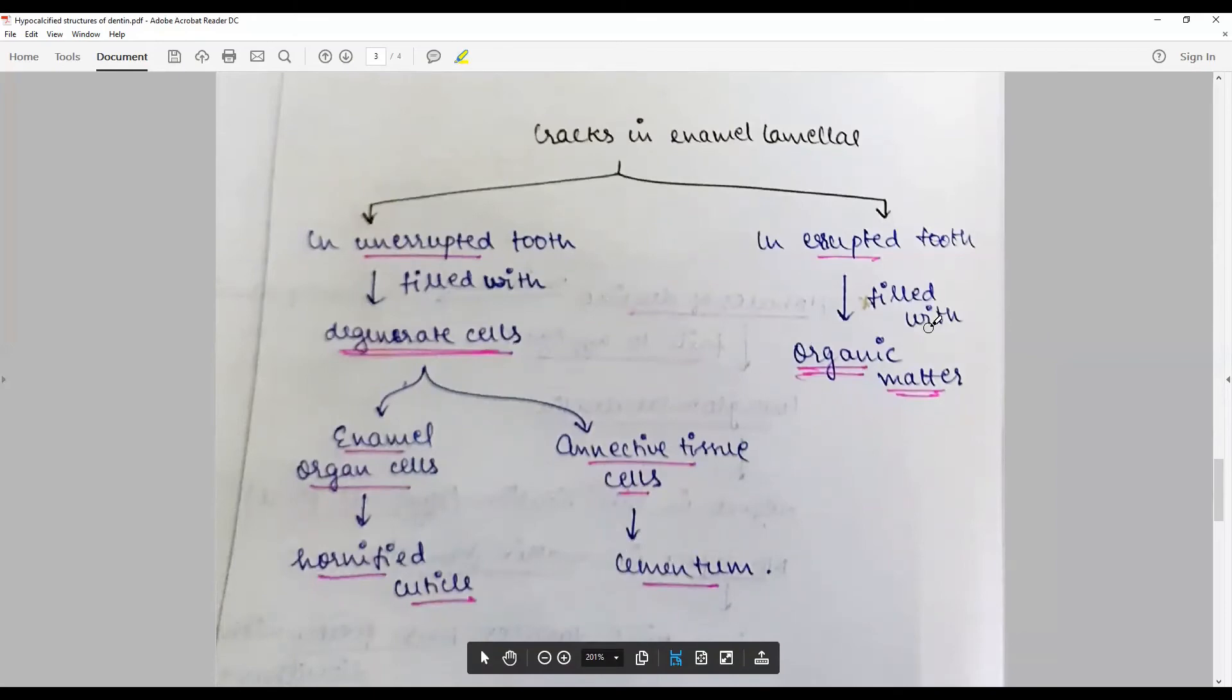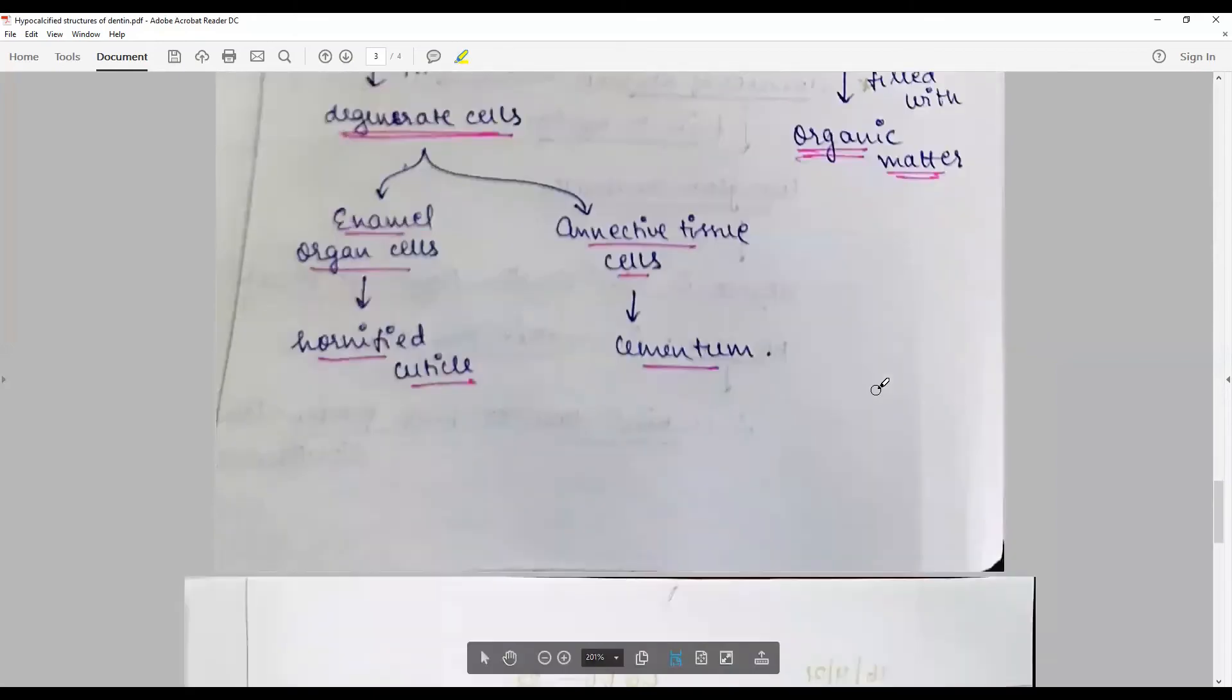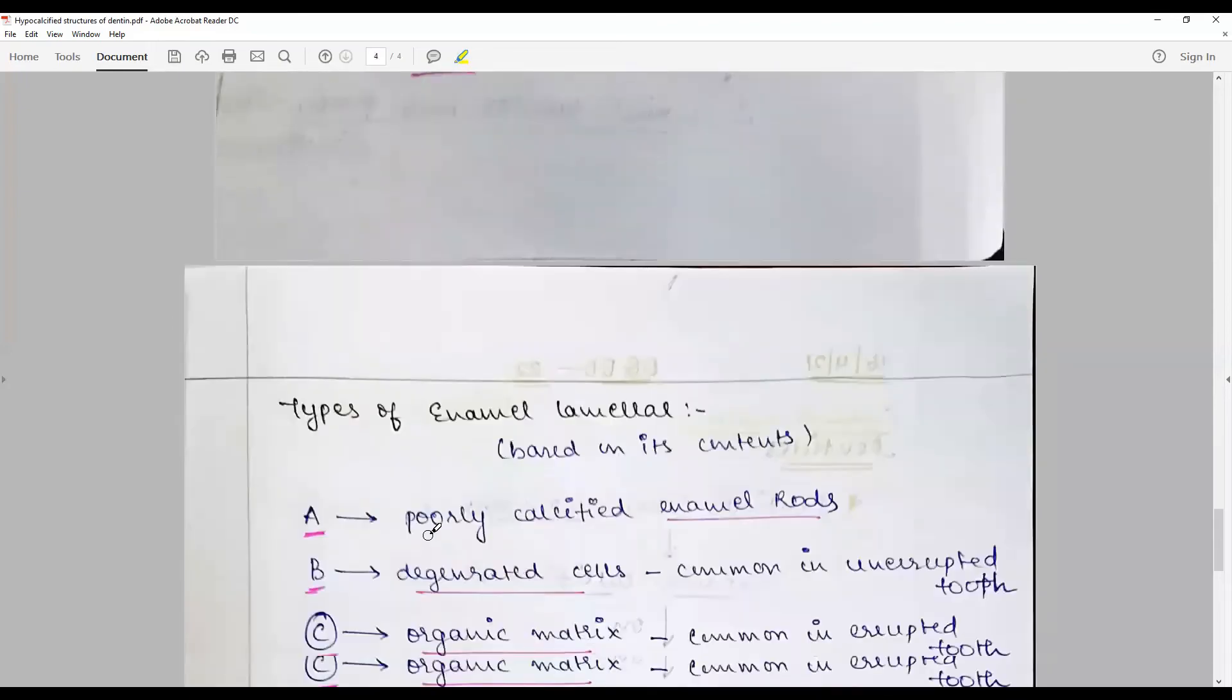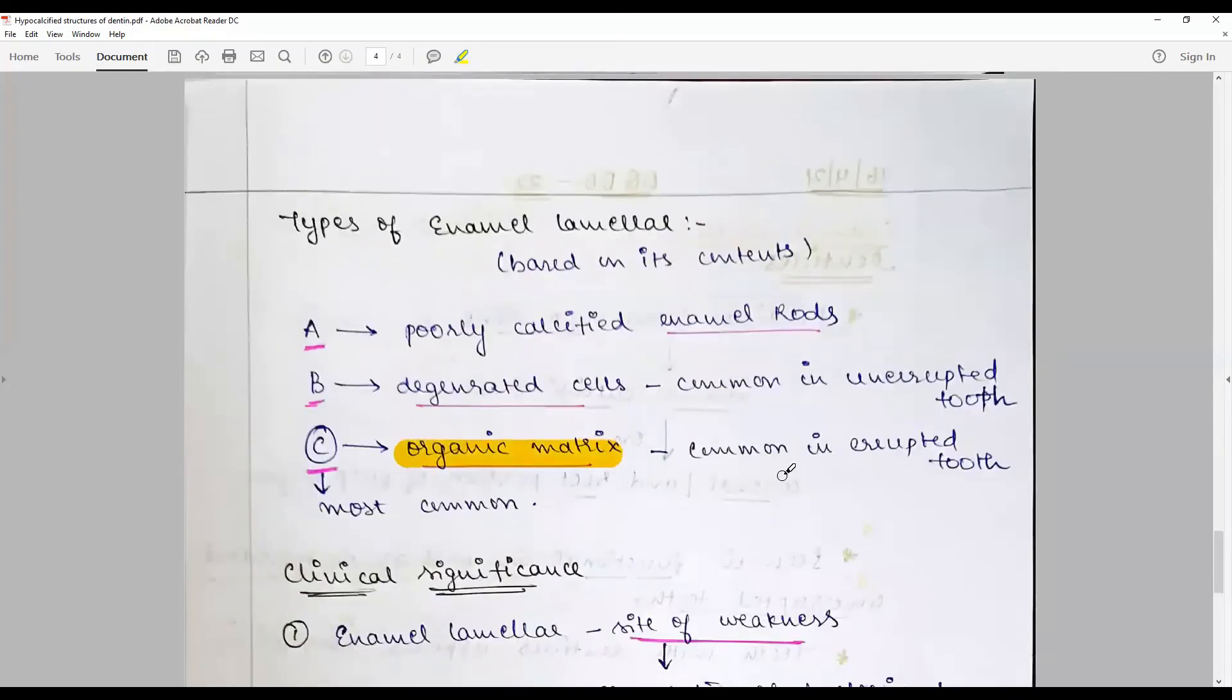In unerupted tooth they will be filled with organic matter. The types of enamel lamellae are A, B, and C. Type C is the organic matrix common in erupted tooth, it is the most common.